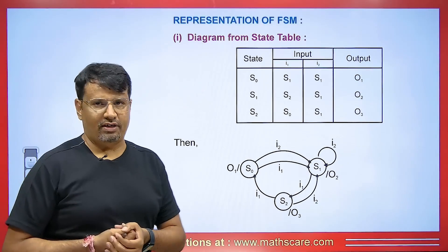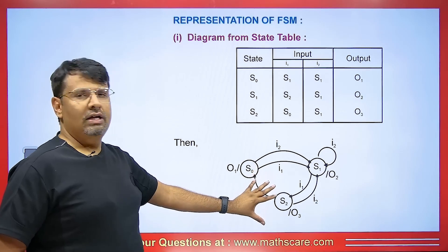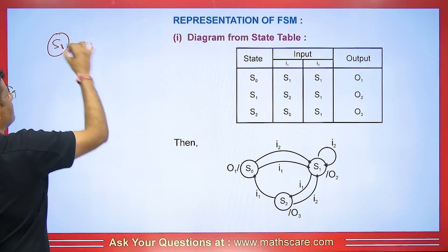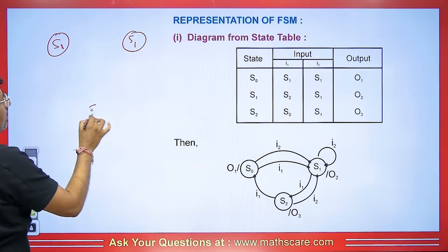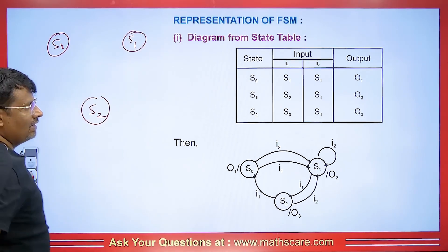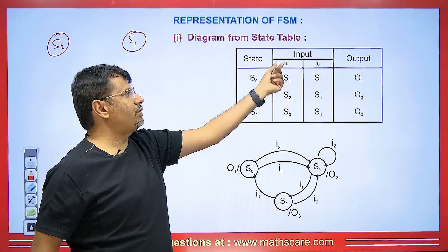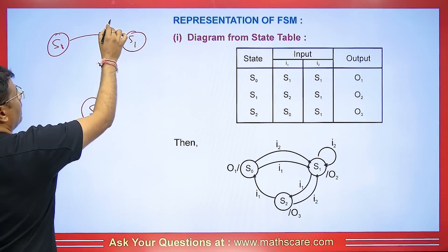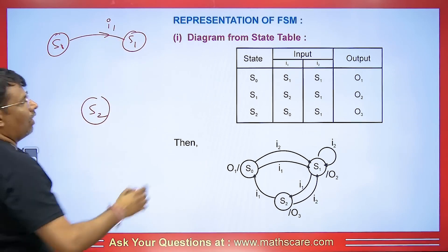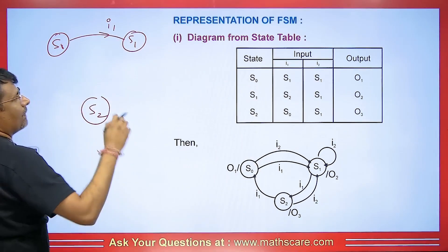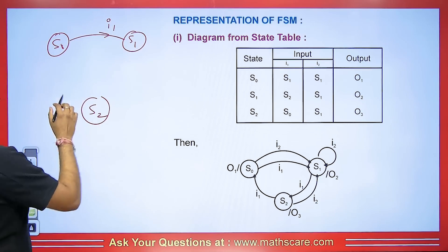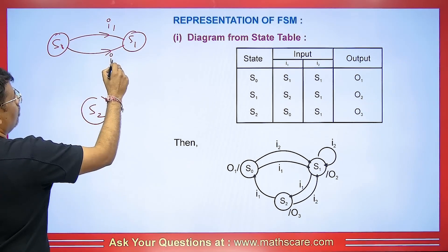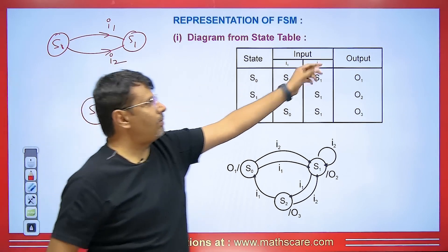They will give you a table in your exam and you have to draw a corresponding diagram. We will represent each state mentioned in the table as S0, S1, S2. When the machine transitions from state S0 to S1, the input is I1. Similarly, when the machine transitions from S0 to S1 again with input I2, we mark the input as I2. But in both cases, the output is O1.